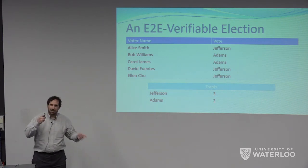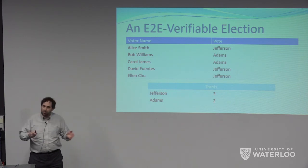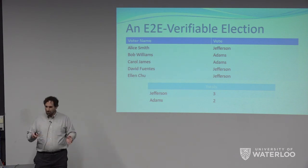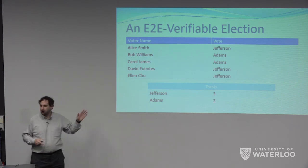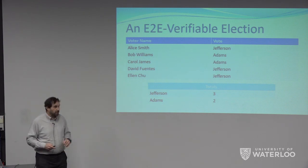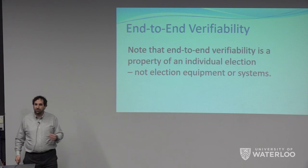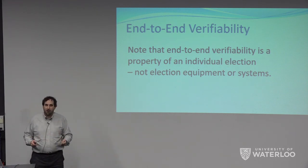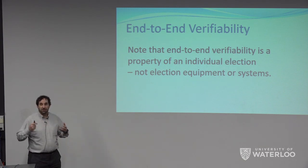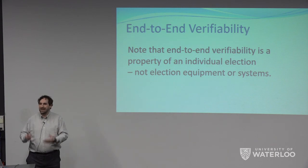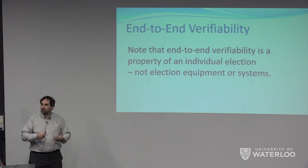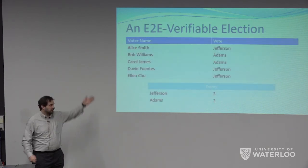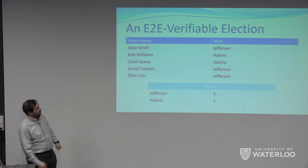You don't necessarily get that somebody else's vote was properly recorded — that's the responsibility of each voter. I can't really check whether your vote is properly recorded. It's really up to the individual voter to do part one, but everybody can do part two. End-to-end verifiability is not a property of election equipment or a system — it's a property of an election. A particular election may or may not be end-to-end verifiable. If it produces a list with these two properties, that election is end-to-end verifiable.